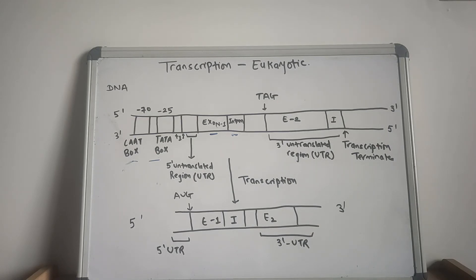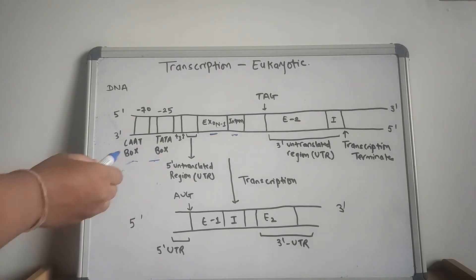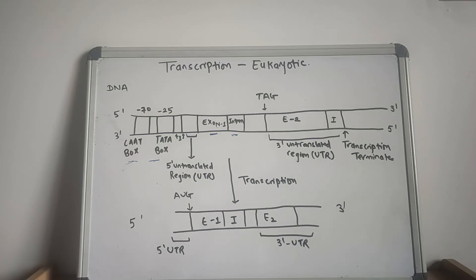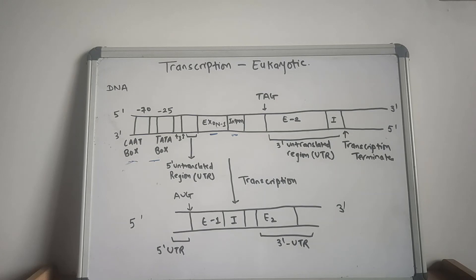With the help of proteins called transcription factors, RNA polymerase II recognizes and binds to the promoter region. The basal promoter region of eukaryotic genes usually has two regions: the TATA box and the CAAT box. The TATA box is also called the Hogness box. RNA polymerase II separates the strands of DNA over a short region to initiate transcription and read the DNA sequence. The template strand is read in the 3' to 5' direction. The initial RNA product is always known as the primary transcript, which is synthesized in the 5' to 3' direction. Both exons and introns are transcribed, but later the introns are removed.